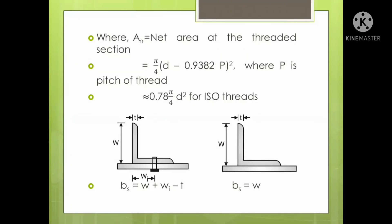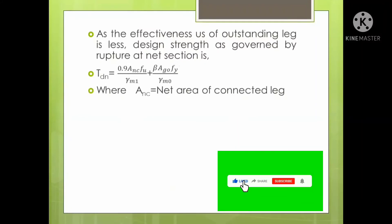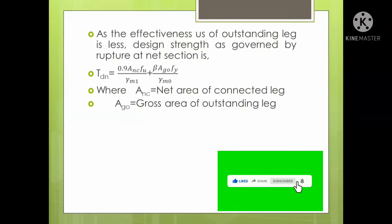If there are bolted connections, the width of the outstanding or connected leg should be reduced accordingly. ANC is the net area of the connected leg, and AGO is the gross cross-sectional area of the outstanding leg — the leg which is not connected to the plate.